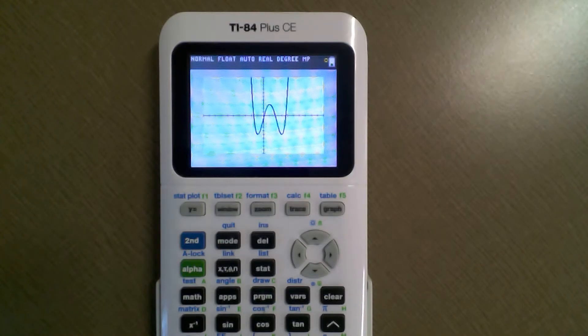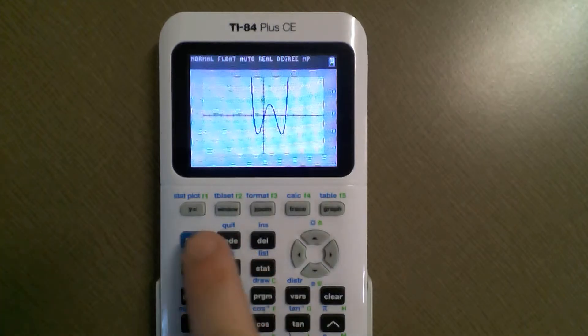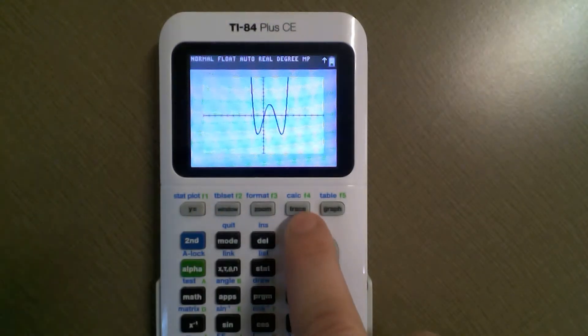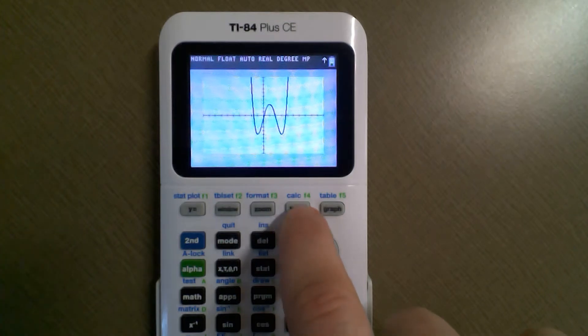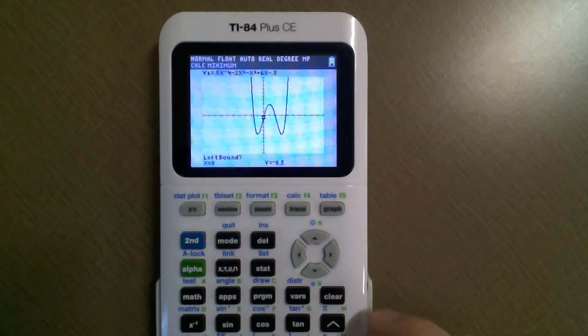There's my polynomial. The goal here is to find mins and maxes. We're going to hit second, the blue button, and then trace, that's this button right here. That's the calc function, the calculate function, and we're going to find the minimum.